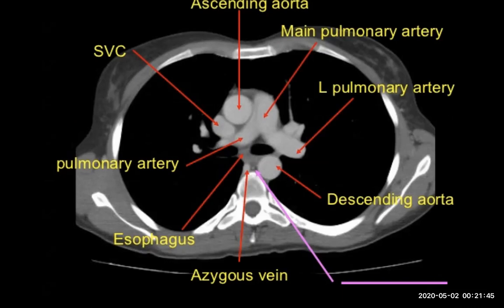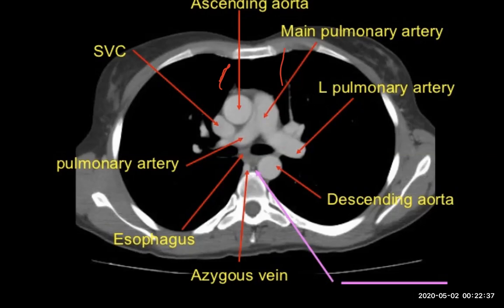Some important structures seen on one slice of the CT scan of the chest include: ascending aorta, descending aorta, main pulmonary artery, right and left pulmonary arteries, SVC (superior vena cava), esophagus, right and left main bronchi, azygous vein, and descending aorta. We must also know the internal thoracic artery and mammary vessels — the vein is on the medial side, the artery on the lateral side.